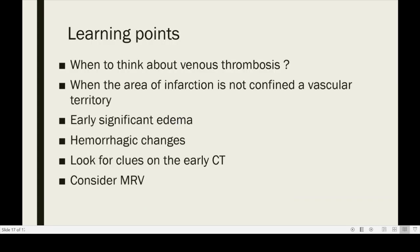So what are the learning points? The key learning points are when to consider venous sinus thrombosis. When reviewing images, if the lesion or areas of infarction are not confined to a vascular territory, think about a venous etiology. When there is early significant edema, or hemorrhagic changes within the lesion, look for subtle signs of thrombosis on CT and consider an MR venogram when in doubt. This is also a unique case where acute hemiplegia was caused by a unilateral internal cerebral vein thrombosis.